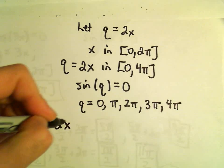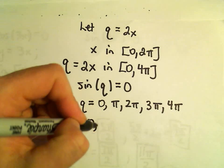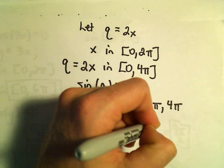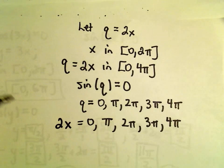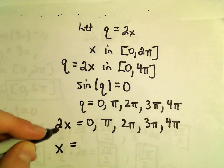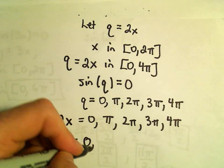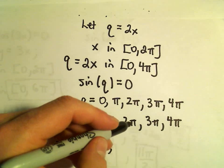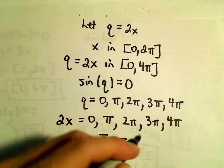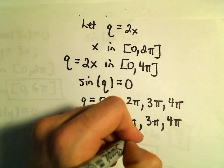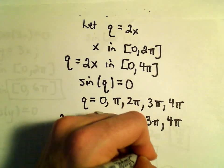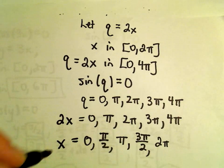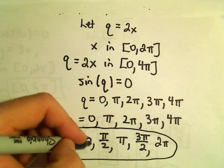I'm just going to say let 2x equal 0, or it could equal π, or 2π, or 3π, or 4π. And what I'm going to do is just simply divide both sides by 2. So 0 over 2 would be 0. π over 2 would be π/2. 2π divided by 2 would just be π. 3π divided by 2 would be 3π/2. 4π divided by 2 would simply give us 2π.